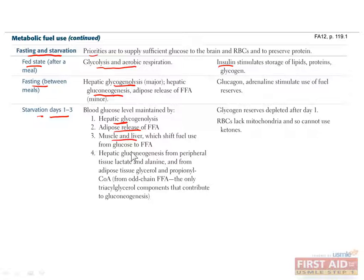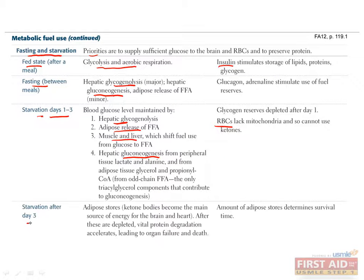The liver can then use these fatty acids as well as lactate and alanine for gluconeogenesis, which is especially useful for erythrocytes, since they can't use fatty acids or ketones. After day three of starvation, ketone bodies become the main source of energy for the brain and the heart. During this phase, about two-thirds of energy used is from ketone bodies, whereas about one-third is from glucose.